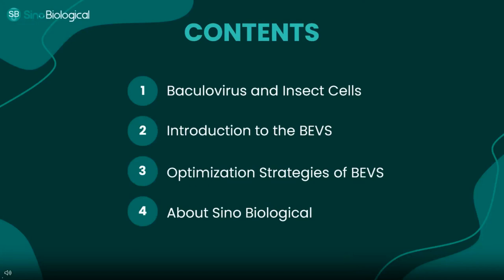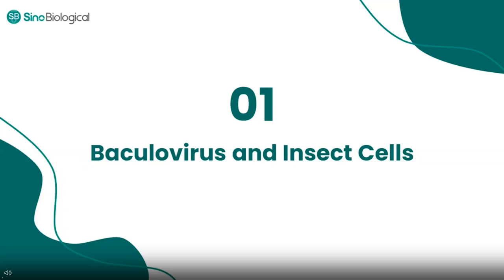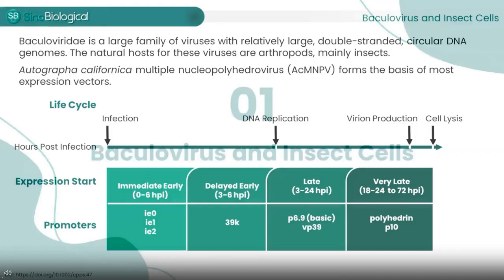Now let's begin today's webinar. The main content and sequence of this talk are shown here. Let's take a closer look at the BEVS. There are two key elements in the BEVS: Baculovirus and insect cells. I will talk in detail about them in the following slides.